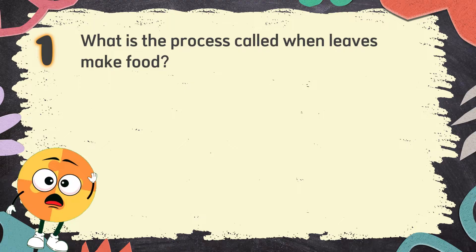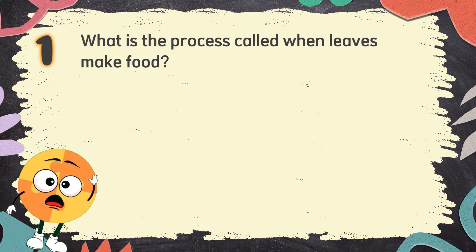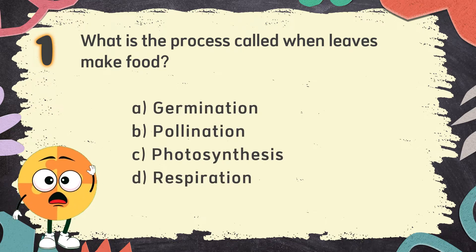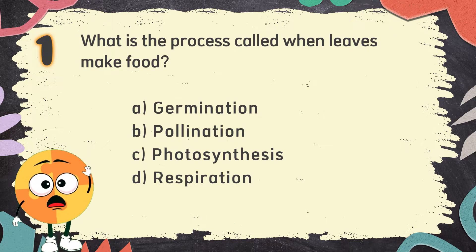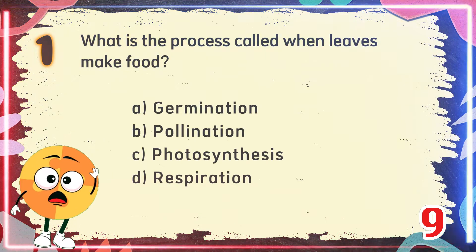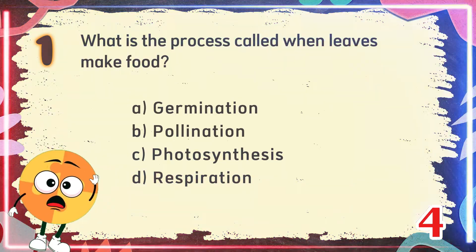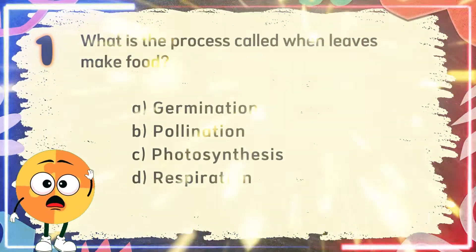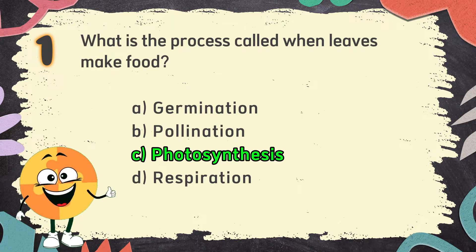Number 1: What is the process called when leaves make food? The choices are: A. Germination, B. Pollination, C. Photosynthesis, D. Respiration. The correct answer is C. Photosynthesis.